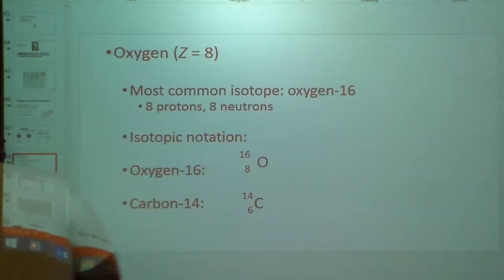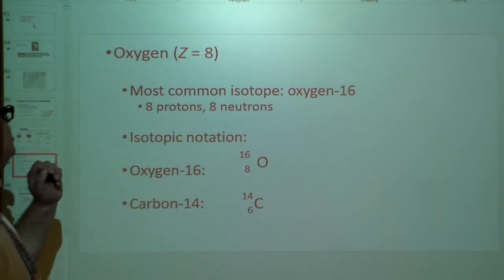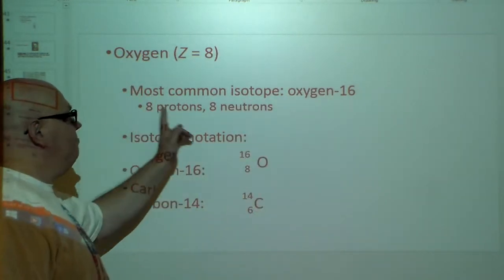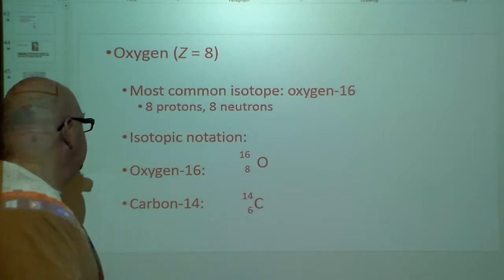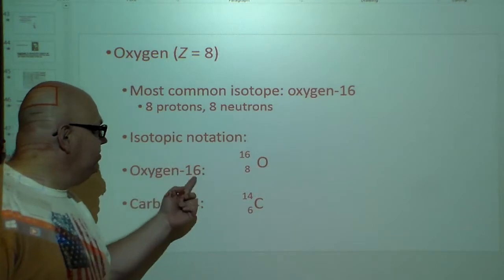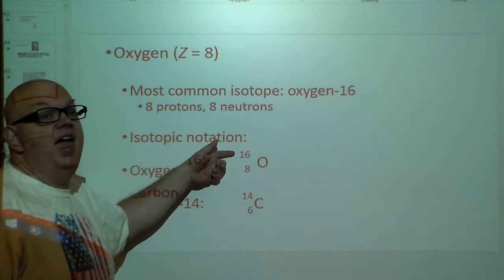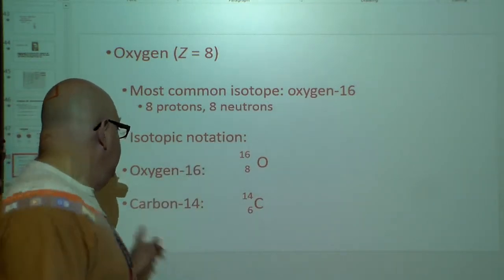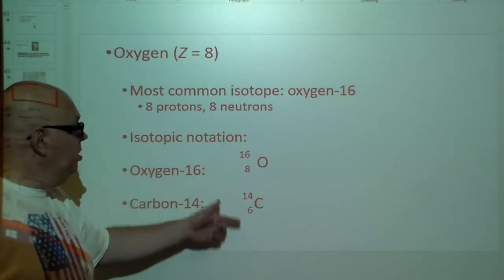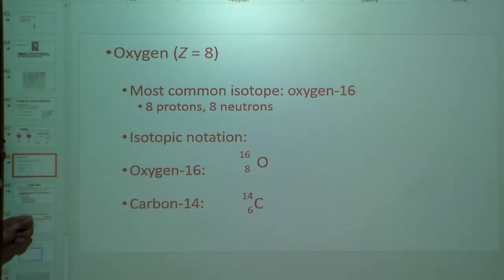Let's take a look at oxygen. Z is 8, so it's got eight protons. The most common isotope is oxygen-16: eight protons, eight neutrons. The isotopic notation for oxygen-16 is 16 and 8 — 8 is the number of protons, 16 is protons plus neutrons. Here's carbon-14: six protons — standard for carbon — and eight neutrons. That's how you get carbon-14. Those are the isotopes.